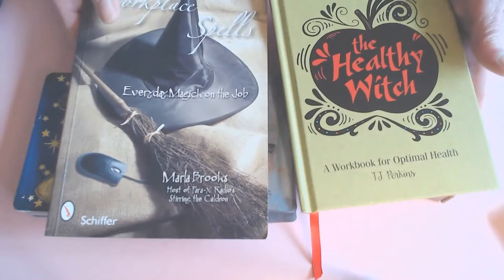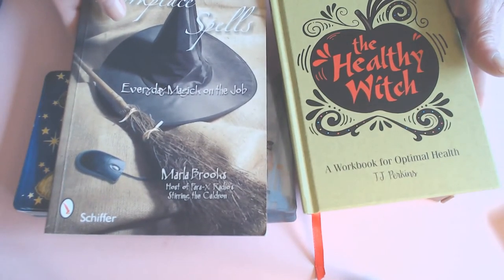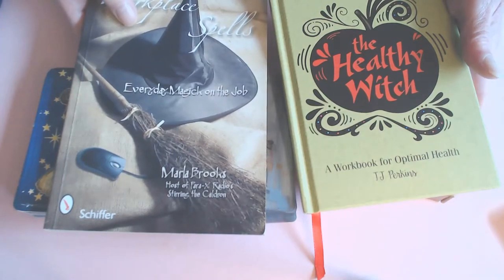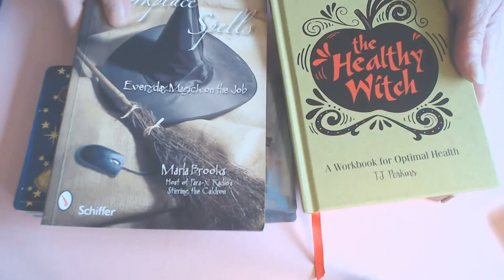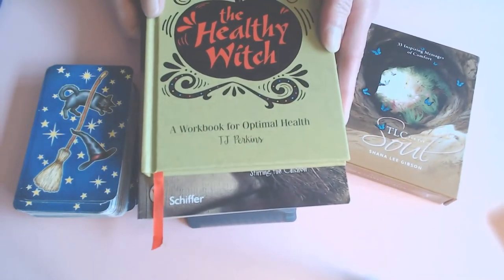And if you would like to get into it yourself, then these are the two books. This one is The Workplace and Spells by Marla Brooks. We did the series on her Oracle card, The Witches Oracle Cards. And this one is by T.J. Perkins, the Healthy Witch.